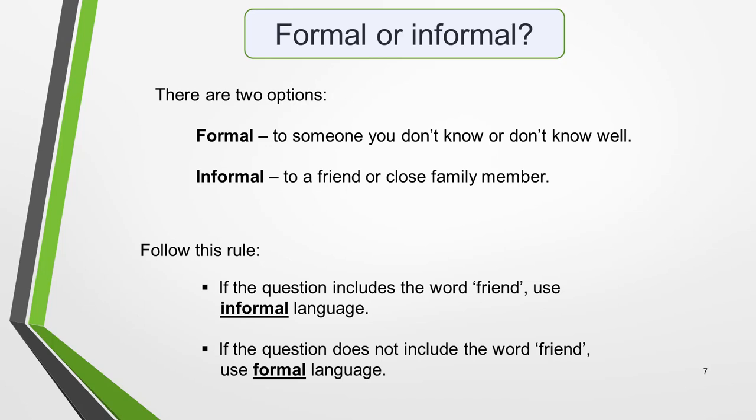IELTS letters must be written in the appropriate tone and style. There are two options: formal, to someone you don't know or don't know well, or informal, to a friend. It's essential that you're able to identify what type of letter you're required to write. Follow this rule: if the question includes the word 'friend', use informal language. If the question does not include the word 'friend', use formal language. The person we're writing to in this question is not a friend, so we must write a formal letter.